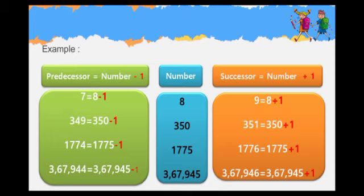Third one, 1,775. The successor of 1,775 is 1,775 plus 1 equal to 1,776. The predecessor of 1,775 is 1,775 minus 1 equal to 1,774.